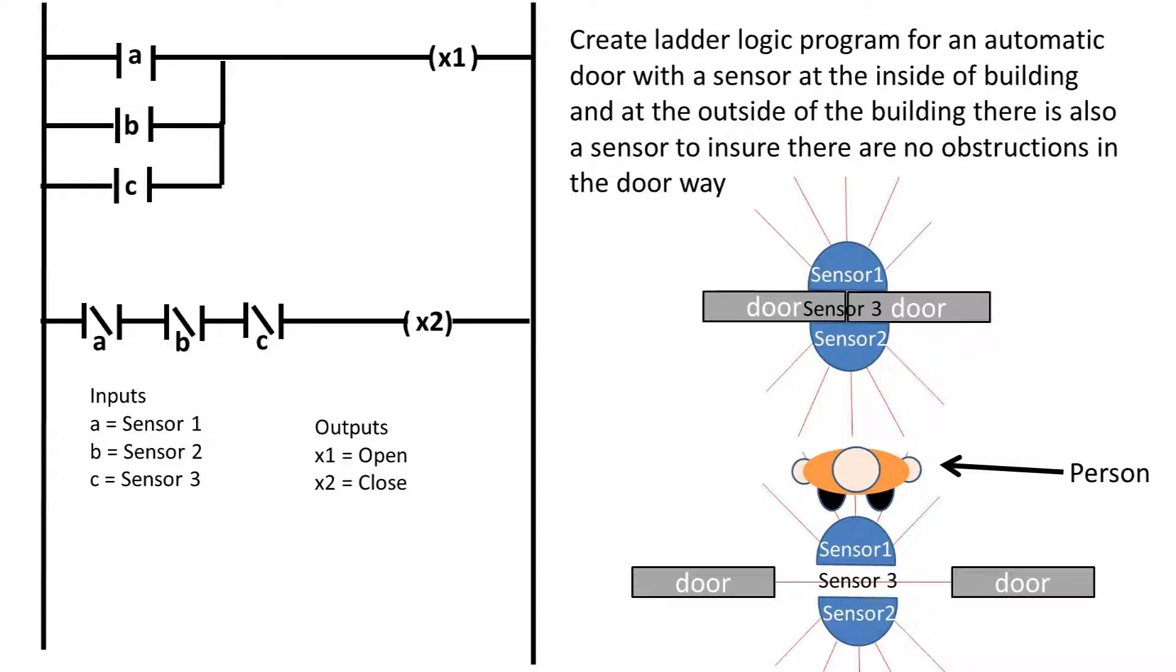Next, we have to make sure that the door only closes when all of the inputs register a false or off input. This sounds like an AND function to me. We can use normally closed contacts in series connected to a coil that closes the door.